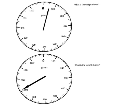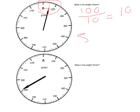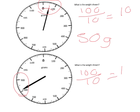For these examples I need to do exactly the same — I need to look at the area the arrow is in. For this one, 0 to 100 is 100, and there are 10 jumps, so I divide by 10. Each small jump is worth 10. The arrow is pointing to the fifth one, so that is 50 grams. On this example, 800 to 900 is 100 — again 10 jumps — so each small jump is worth 10, and it's the first jump, so it's 810 grams.